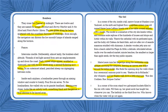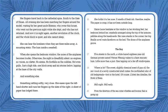'In a corner of the room stand two galvanized buckets filled to the rim with water. Fill them up whenever you can, her great-uncle has taught her. Who knows when the water will go out again. Her fingers travel back to the cathedral spire, south to the gate of Dinan. All evening she has been marching her fingers around the model, waiting for her great-uncle Etienne, who went out the previous night while she slept and who has not returned. And now it is night again, another revolution of the clock, and the whole block is quiet, and she cannot sleep.' This marching of her fingers around the model confirms her blindness — even the word marching feels militaristic.